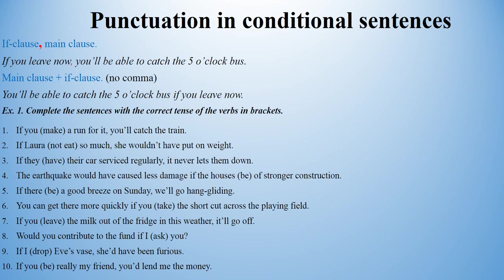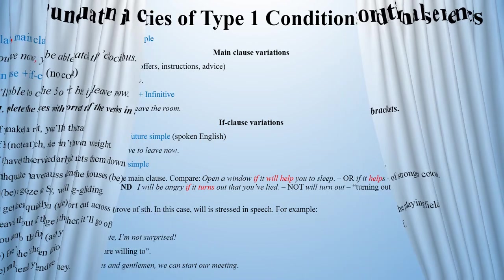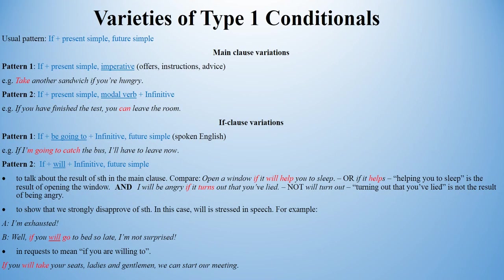I've finished my overview of conditionals, and we're going to look into the different types in more detail. I'll start with type 1 conditionals. Here, we can use a variety of other patterns in both the if clause and the main clause. Let us deal with the main clause first. When we make offers and give instructions and advice, we can use an imperative in the main clause. For example, 'Take another sandwich if you are hungry.' Moreover, we can use modal verbs in the main clause. For example, 'If you have finished the test, you can leave the room.'